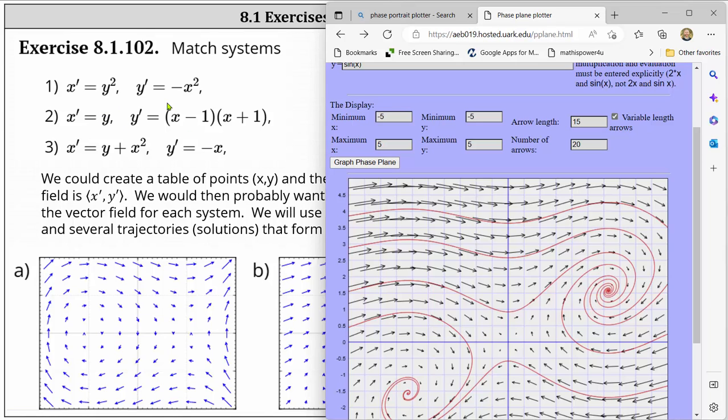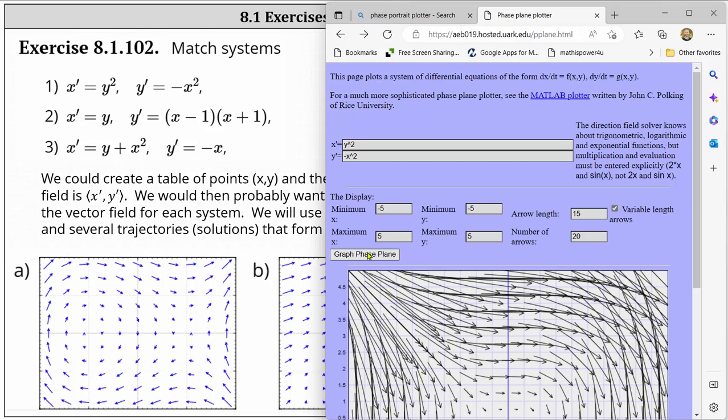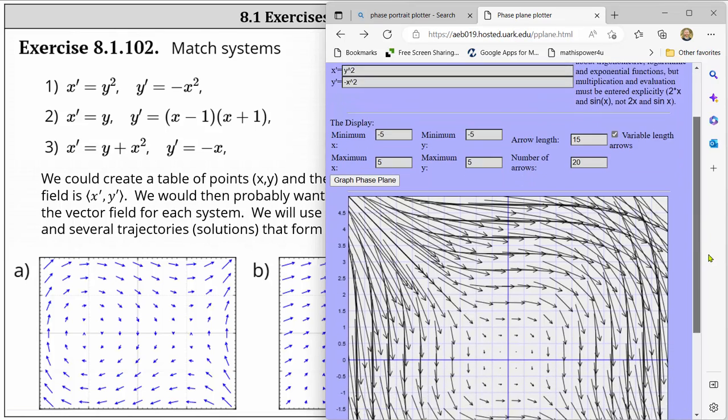So for number one we have x prime equals y squared and y prime equals negative x squared. Scrolling back up we simply enter y squared for x prime and negative x squared for y prime. If we click graph phase plane notice how we need to make some adjustments to better match the given slope fields.